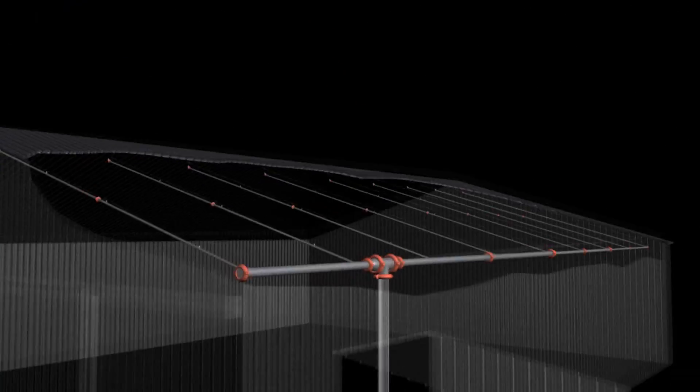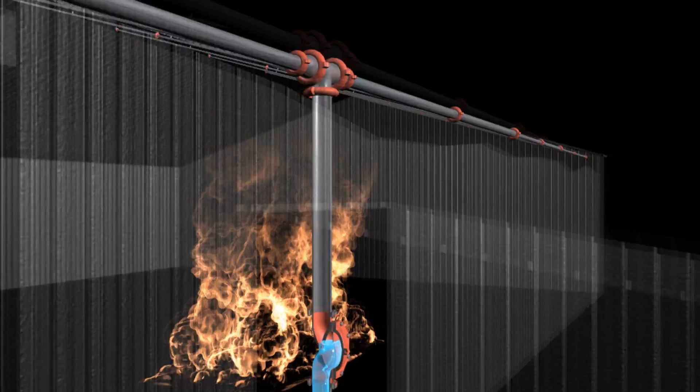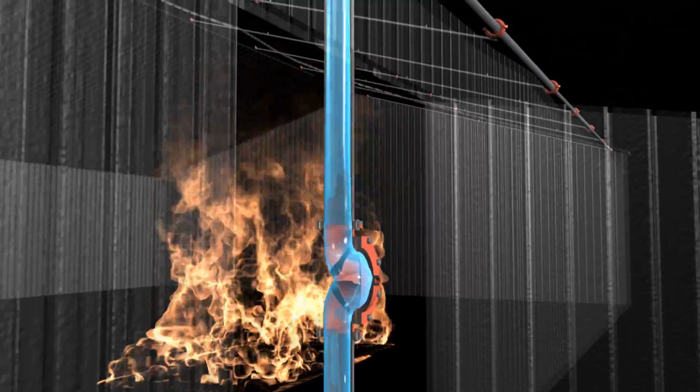When a fire occurs, the deluge valve opens and water is supplied to the heads under water main pressure.